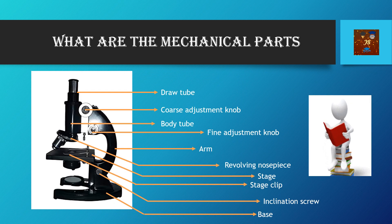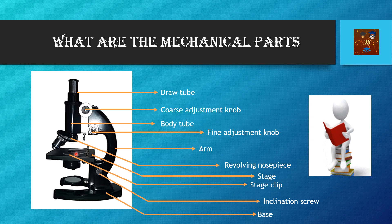First of all, let us look at what the different mechanical parts are. From the very beginning, this is the draw tube, then this round one is the coarse adjustment screw. Just after the draw tube comes the body tube, then the fine adjustment screw is below the coarse adjustment one. This slanting part is the arm, and this one is the revolving nose piece.